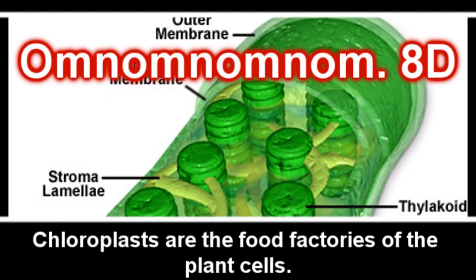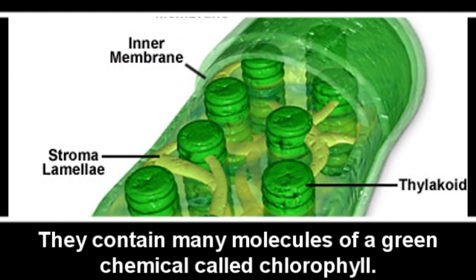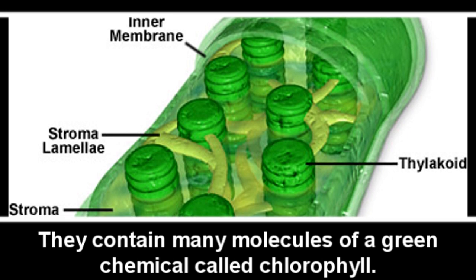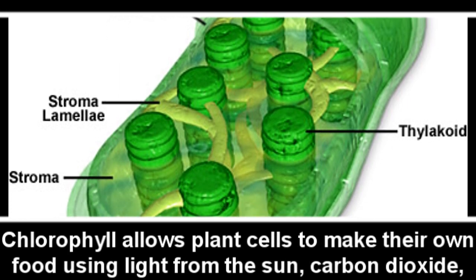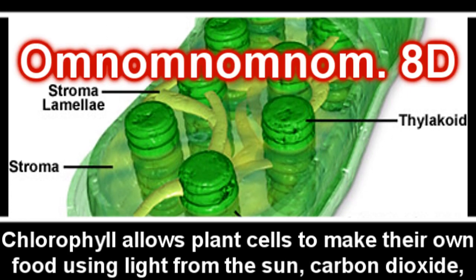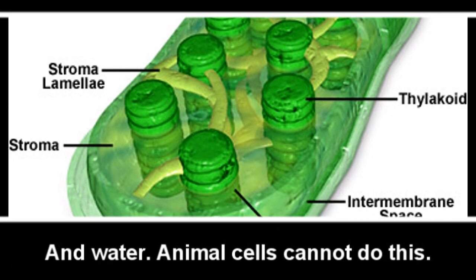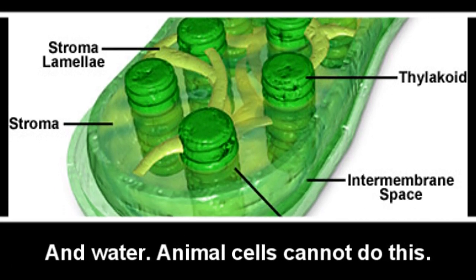Chloroplasts are the food factories of the plant cell. They contain many molecules of a green chemical called chlorophyll. Chlorophyll allows plant cells to make their own food using light from the sun, carbon dioxide, and water. Animal cells cannot do this.